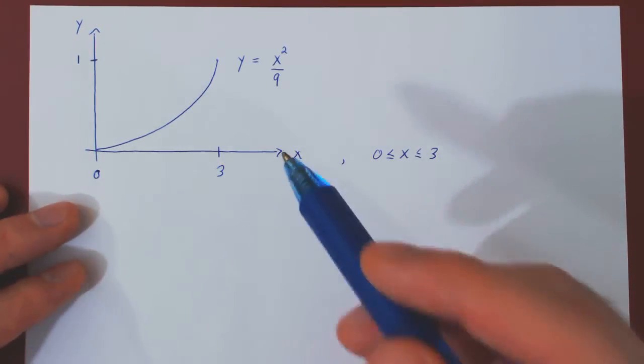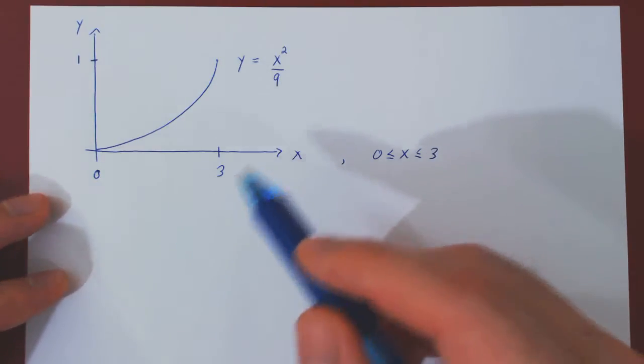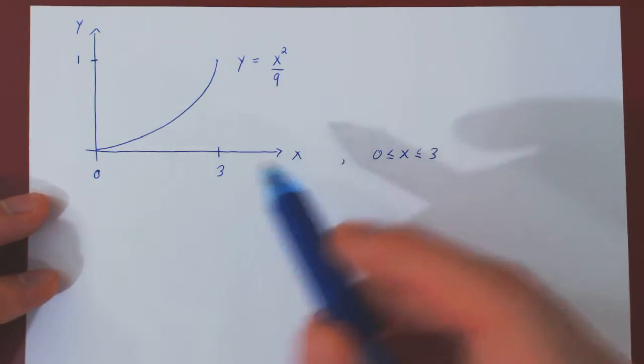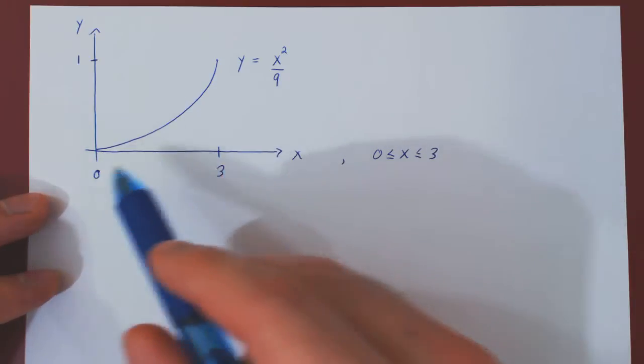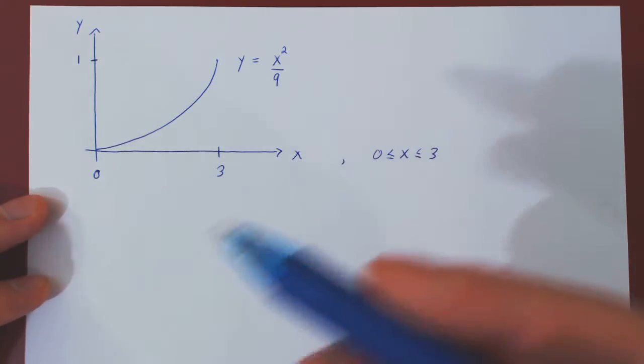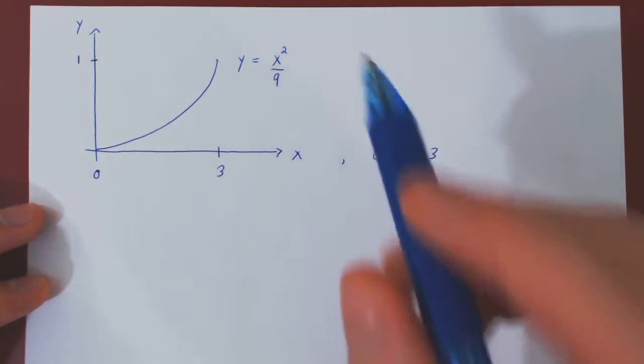So if you recall, to prove that a function is a density function for some given variable x over some given interval, in this case from 0 to 3, we have to prove that the function satisfies two conditions.